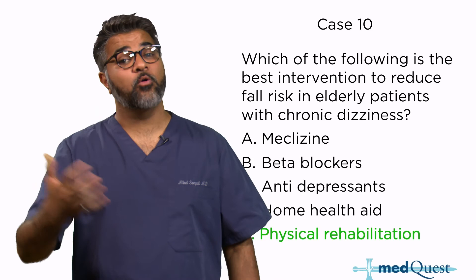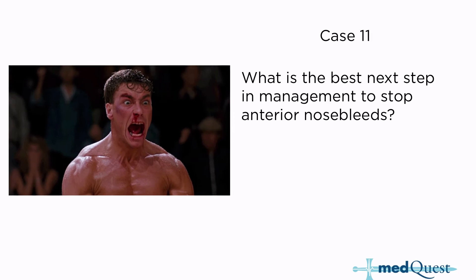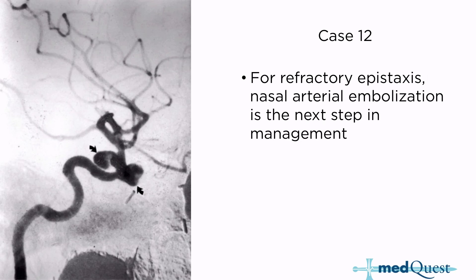Case eleven: what is the next best step to stop anterior nosebleeds? Tell the patient that consistent pressure for at least 15 minutes over the bridge of the nose will help stop the anterior nosebleed. For refractory epistaxis, nasal arterial embolization is the next step in management. In this arteriogram you can see two pseudoaneurysms that have developed and will be embolized to stop the bleeding.